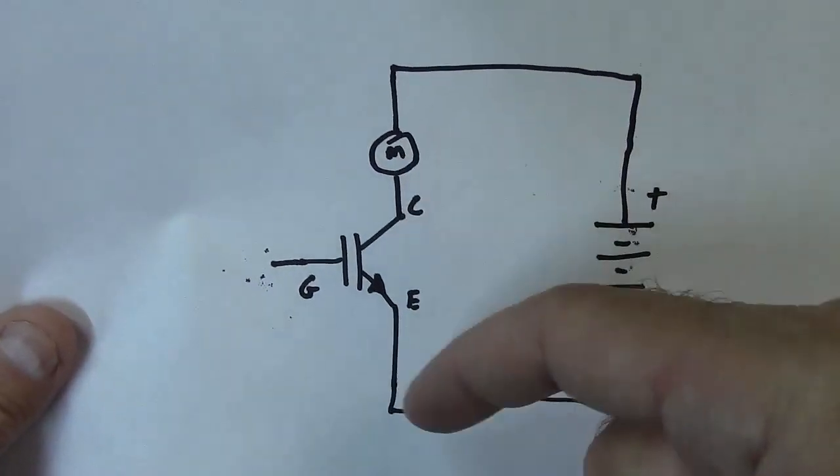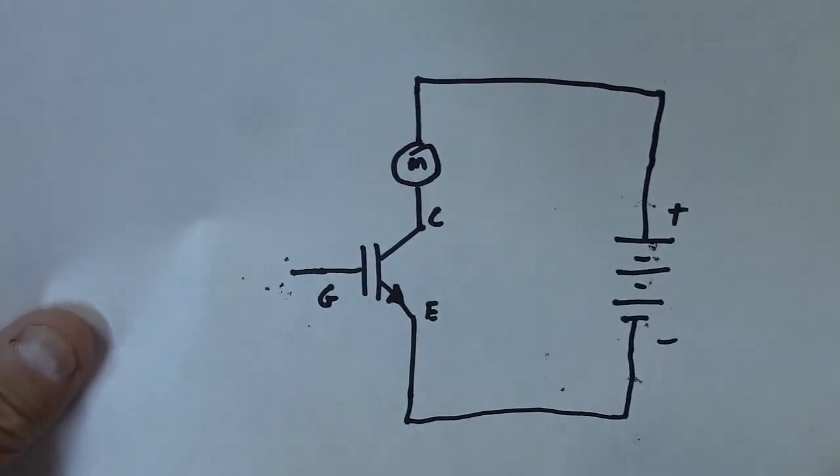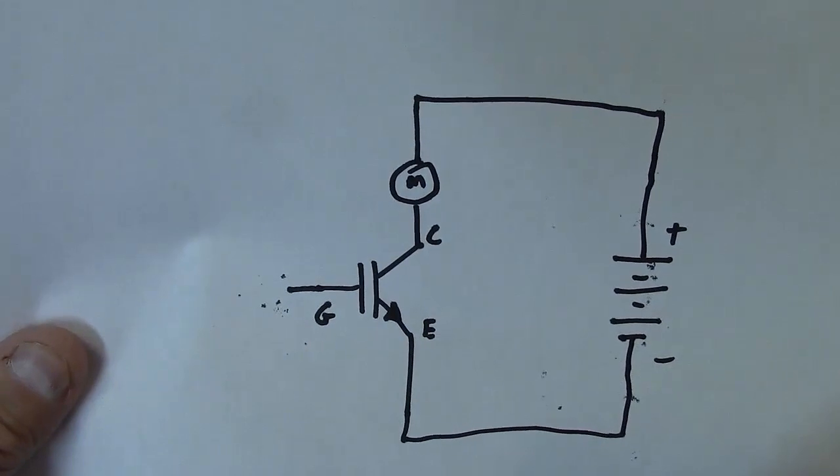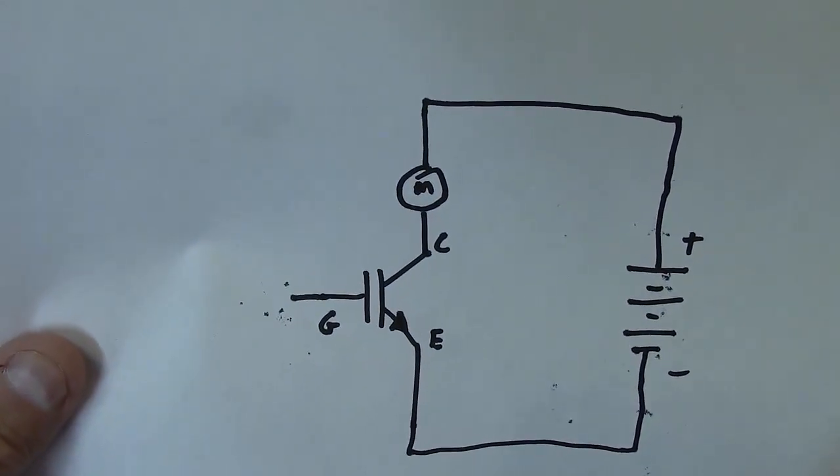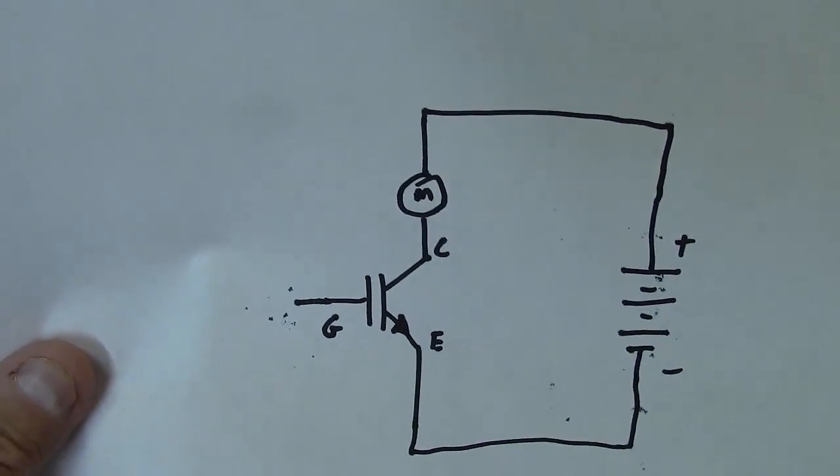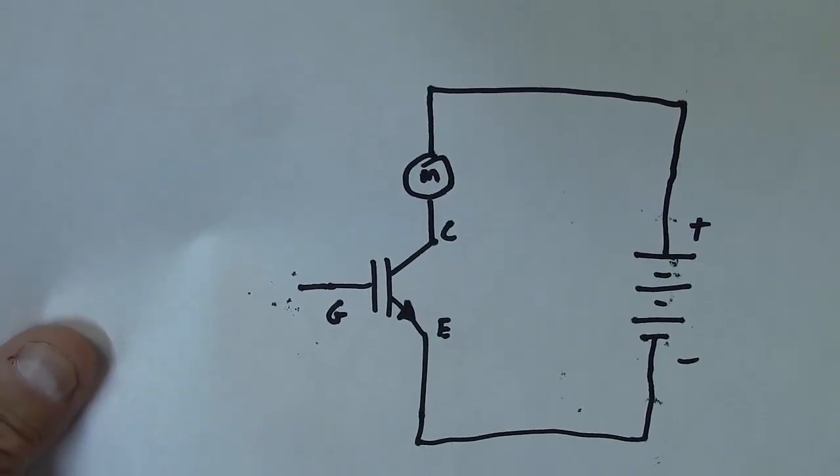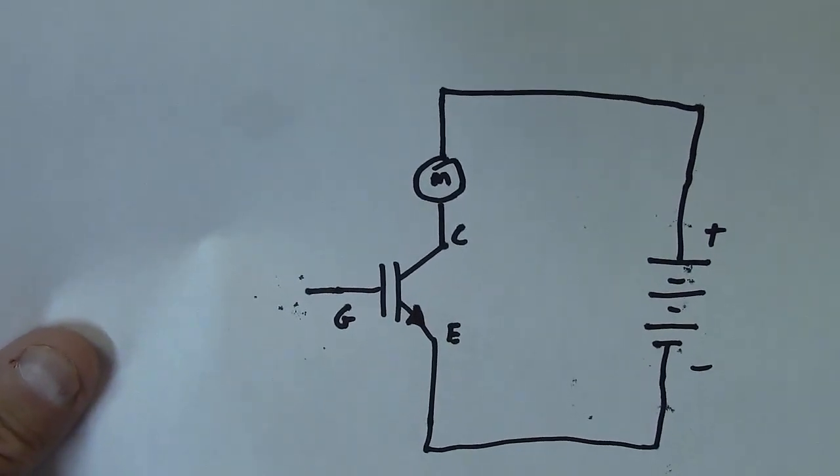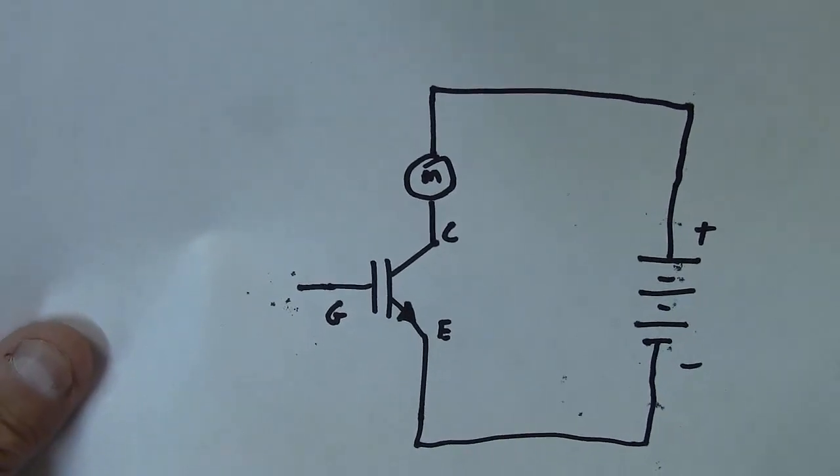And the IGBT will switch on and off this motor when we apply a drive to the gate. Now the way we're going to drive the gate is just by touching it with our fingers and touching the positive terminal of the battery to turn it on, touch it with our fingers and touch ground to turn it back off again. They're very sensitive devices.